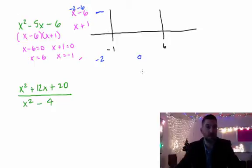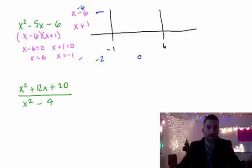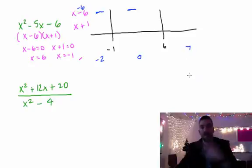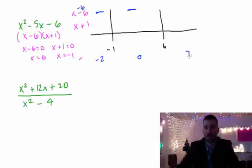Next I pick 0, which is between negative 1 and 6 in the middle area. Plugging 0 into (x minus 6): 0 minus 6 is also negative. Then I pick a number larger than 6, like 7, from the right region. Plugging 7 in: 7 minus 6 is positive. So for the (x minus 6) factor I get negative, negative, positive across the three regions.